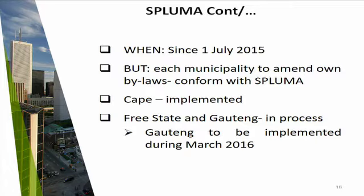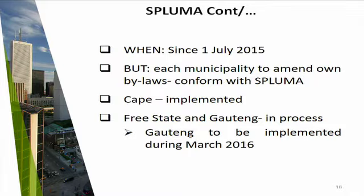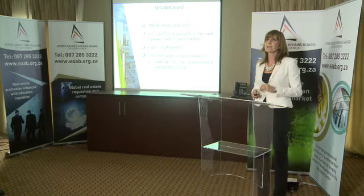SPLUMA came into operation on 1 July 2015 on a national level, and now it's down to each and every province implementing their bylaws step by step. Cape Town was first — they also implemented their bylaws on 1 July 2015 and are already well into their new SPLUMA regulations. Free State and Gauteng are in the process. Gauteng instituted their bylaws on the 2nd of March this year, so these are brand new processes initiated by the SPLUMA Act.